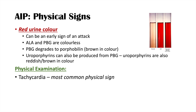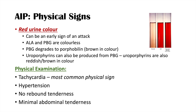On physical examination, tachycardia is the most common physical sign. Hypertension can also be seen. Interestingly, when the abdomen is palpated in a patient with an acute attack of AIP, they don't complain of rebound tenderness and there is generally minimal abdominal tenderness on palpation - even though they describe constant severe pain.